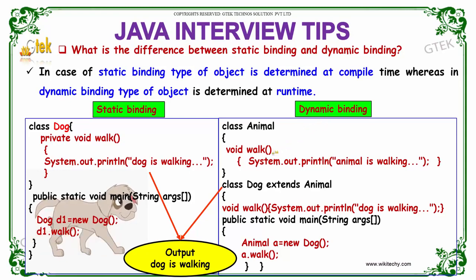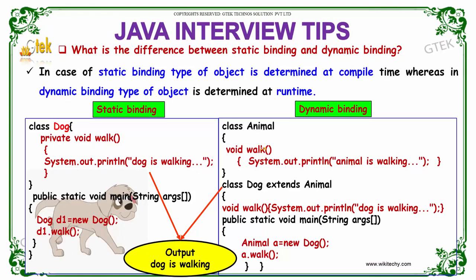Whereas in dynamic binding, we have a base class and a derived class that is derived from the base class. So, if you see, we have two methods for walk and the two methods have different output lines. When we execute the void main, we are creating an object for the base class and assigning it to a derived class initialization.